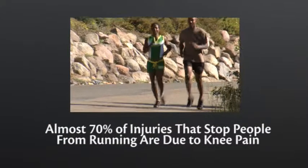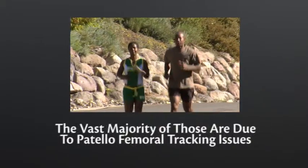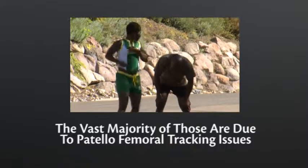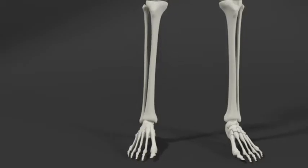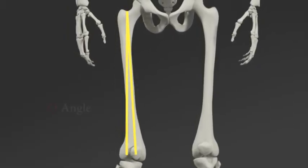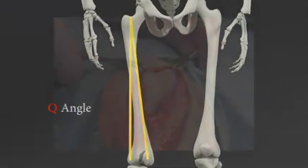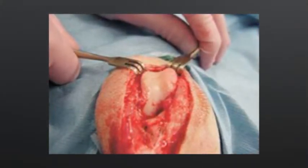Almost 70% of all running injuries that stop people from running involve knee pain. By far the most common cause is patellofemoral tracking disorder. As the posture of the foot collapses, the knee internally rotates and the Q angle increases.